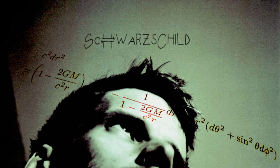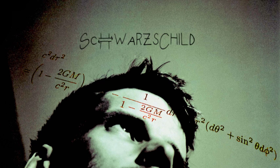E squared, i-top squared equals parentheses one minus two GM over E squared our distance close parentheses, E squared, a word squared.